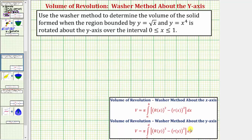Because we're integrating with respect to y, notice how both the inner radius and outer radius must be expressed as functions of y. Let's first look at the bounded region over this closed interval and then determine the solid that would be formed when rotating about the y-axis.